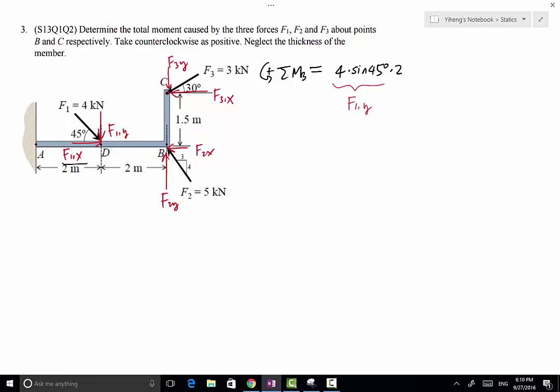Then we move on to F2. The force F2 passes through point B, therefore F2 does not have any moment about point B. And then we realize that the line of action of F3Y also passes through point B.